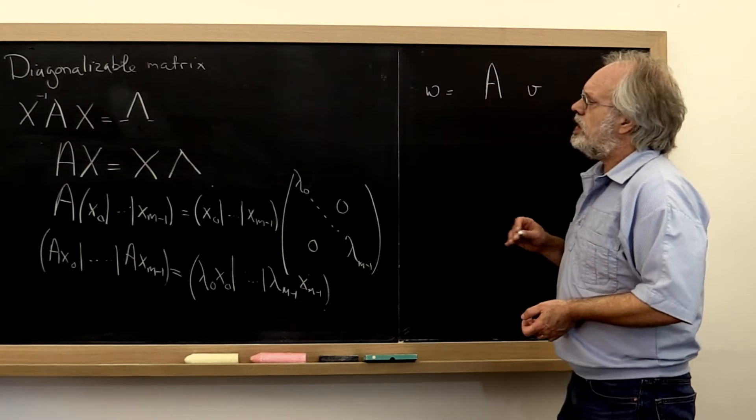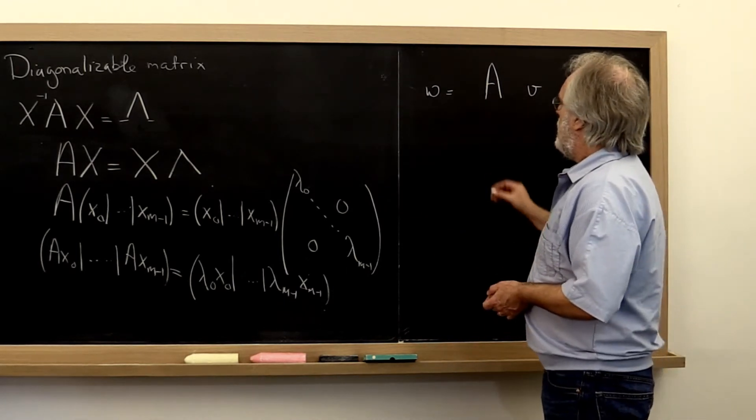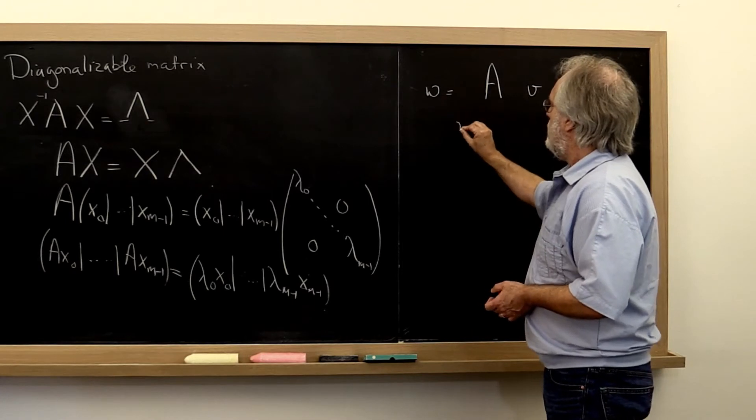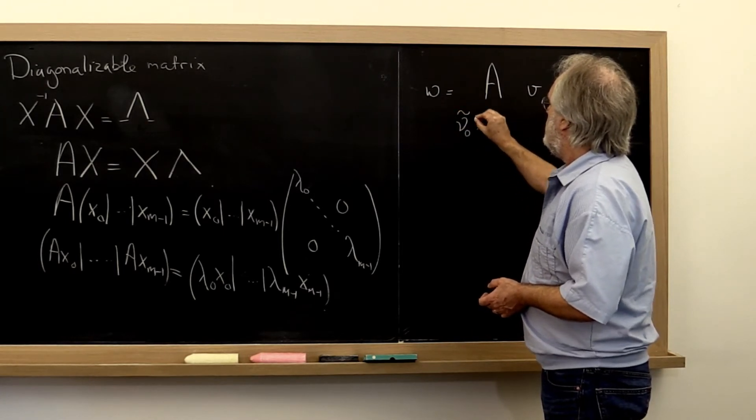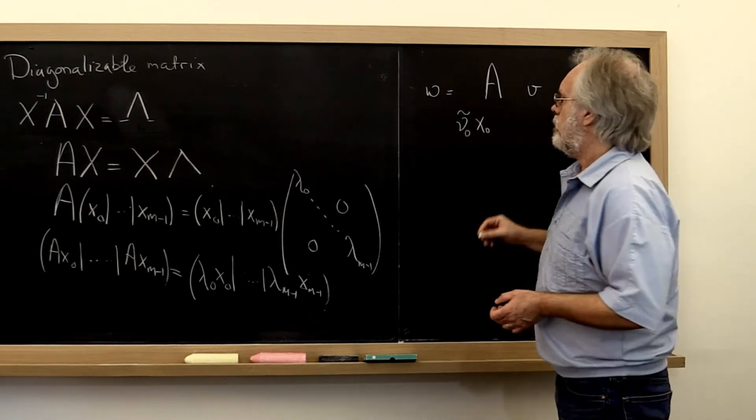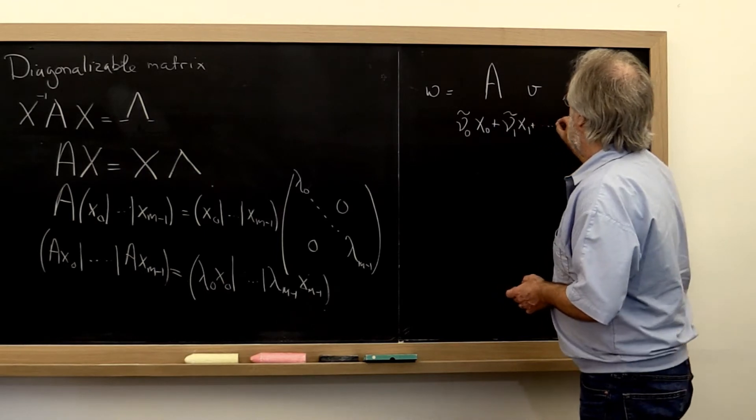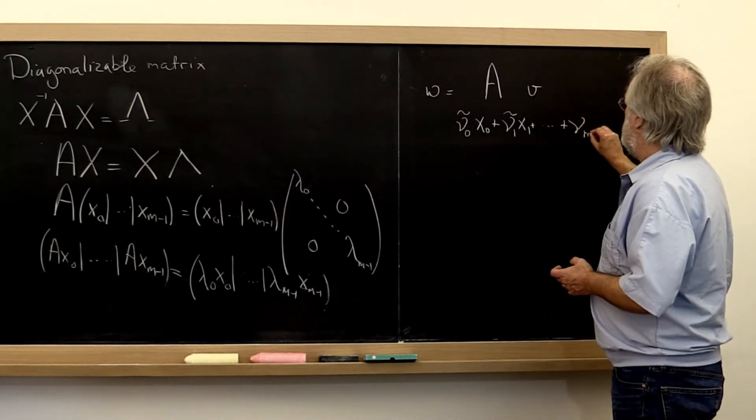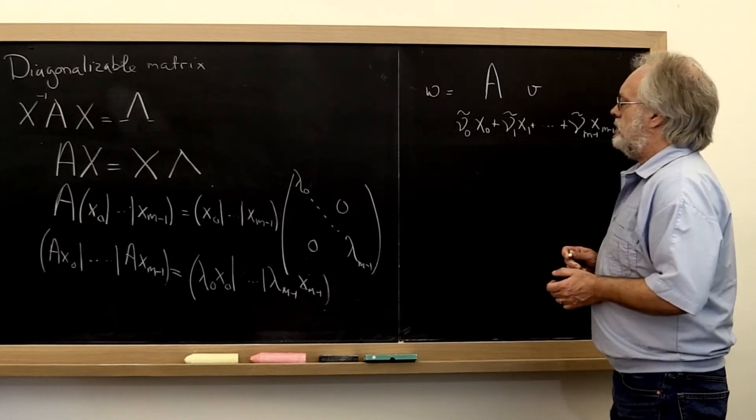Alternatively we can say, what if we take our vector v and write it as a linear combination of these columns of our matrix X?